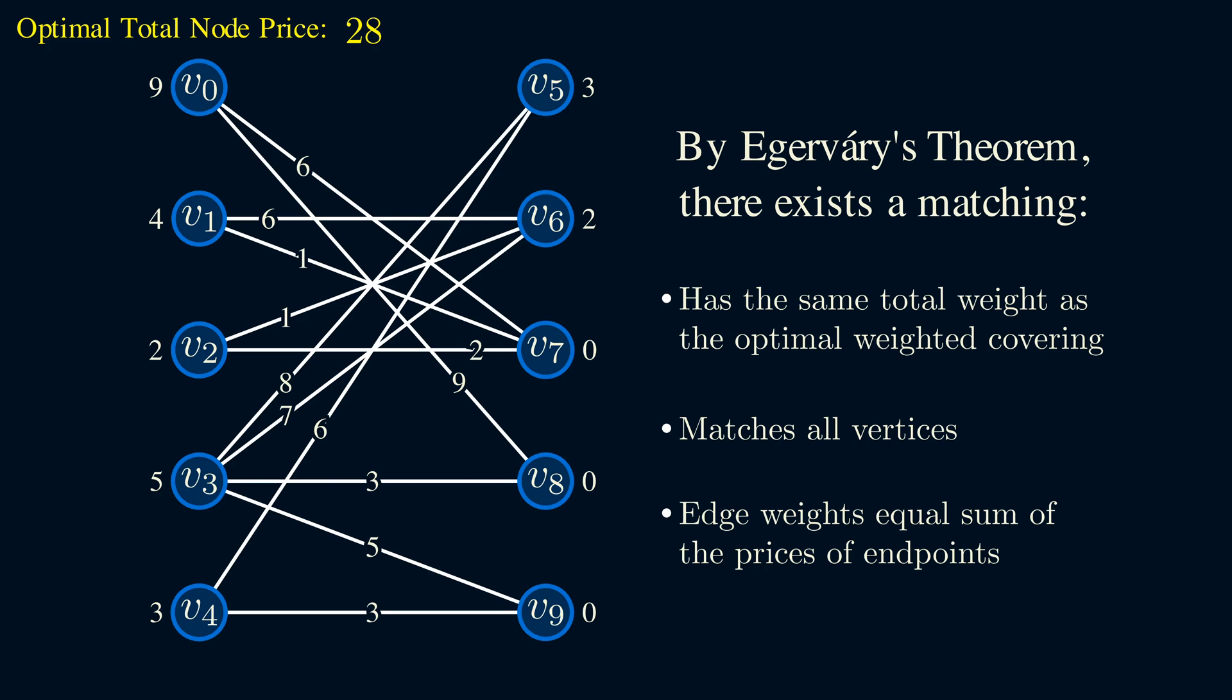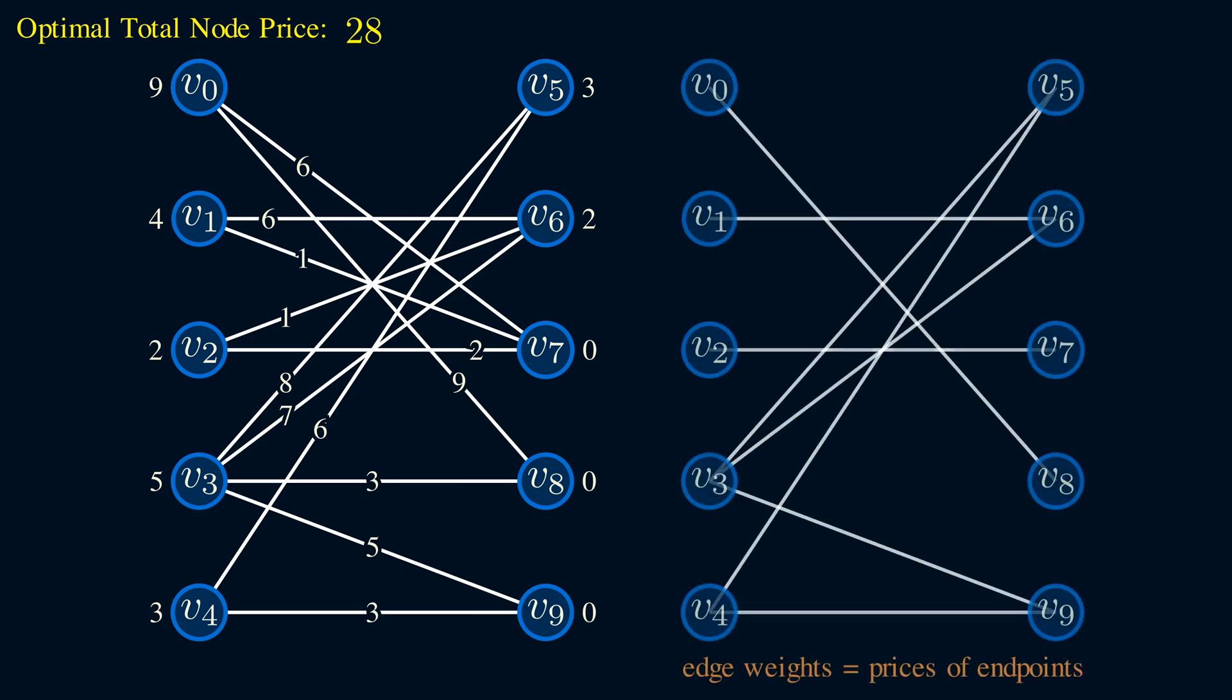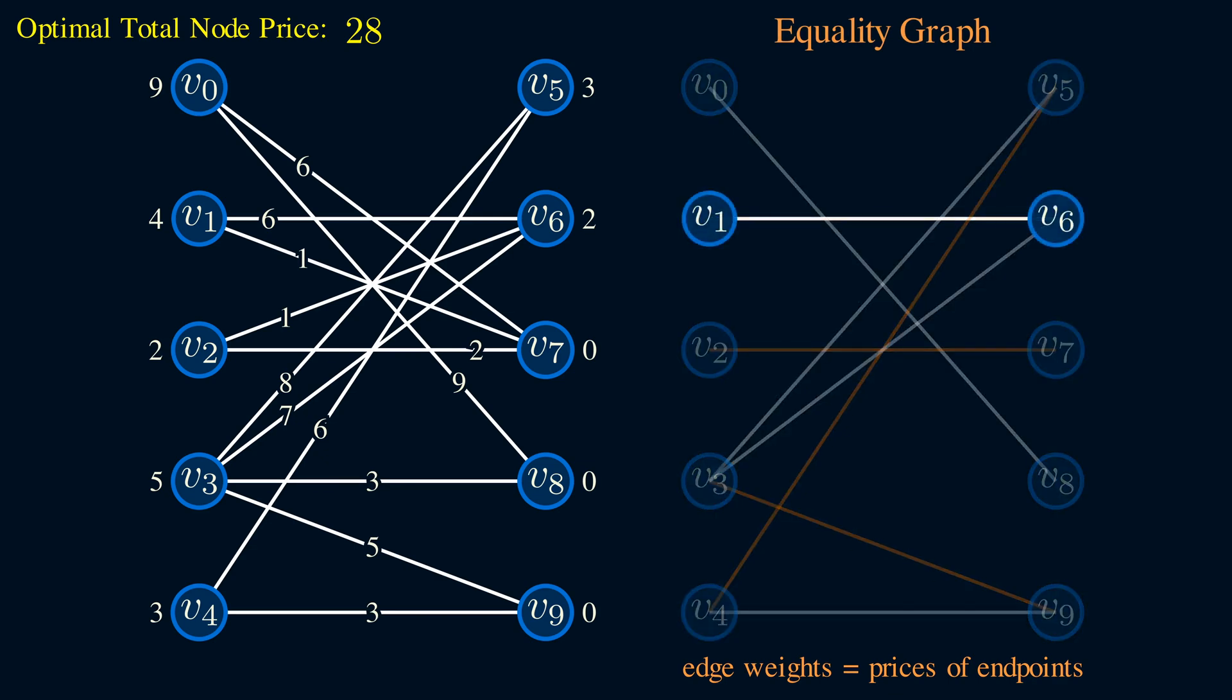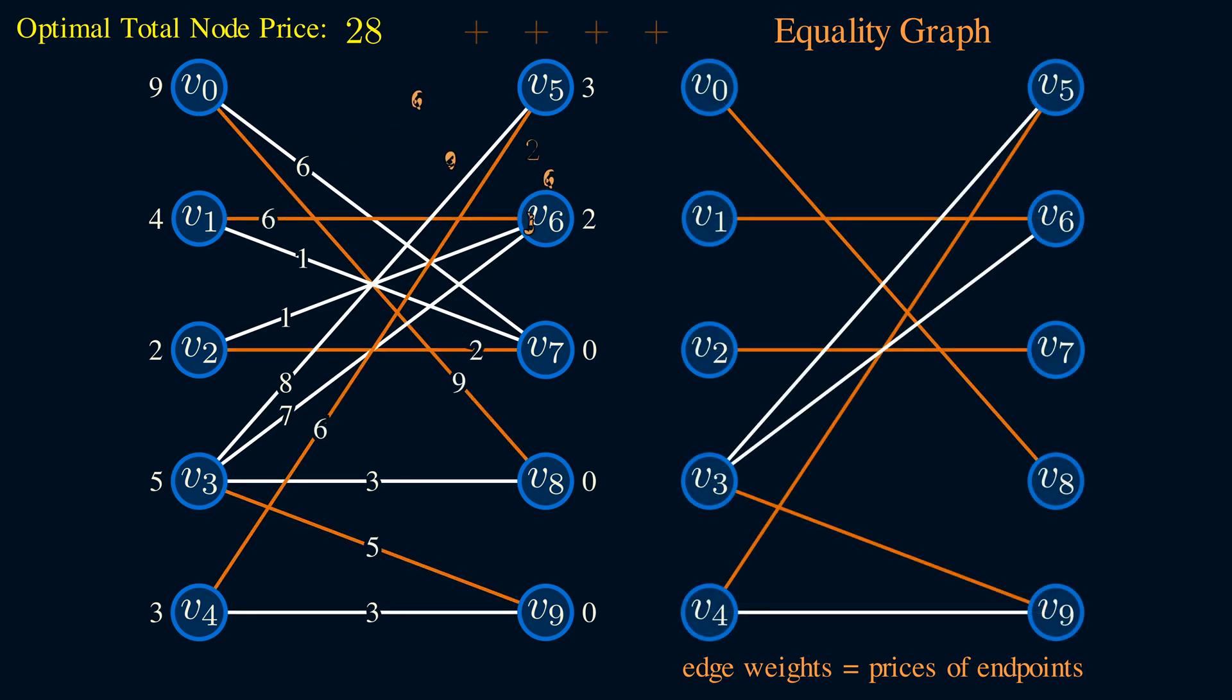Because of these observations, we only need to consider the edges that satisfy the last bullet point. And we can form a separate graph with only those edges. And we'll give it a special name, we'll call it the equality graph. Now, you just need to find the largest matching in this equality graph. If we sum up the weights for this matching, it sums up to 28, which matches the total node price. So basically, given optimal node prices, all we need to do is form the equality graph, then find a matching that matches all vertices in this graph.